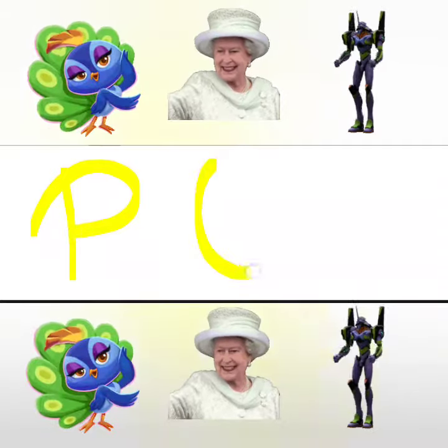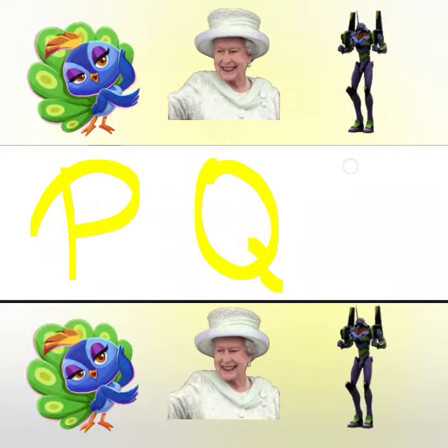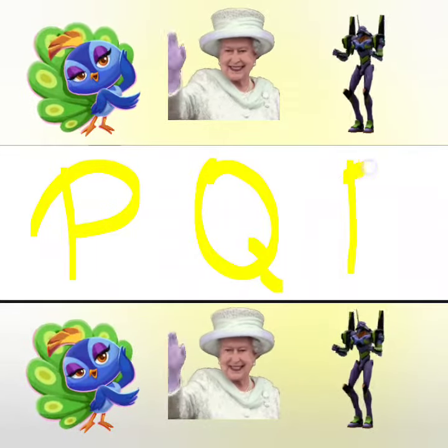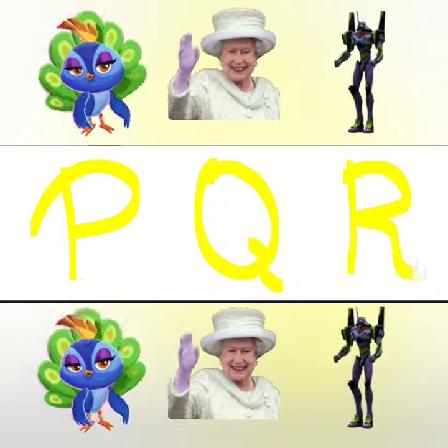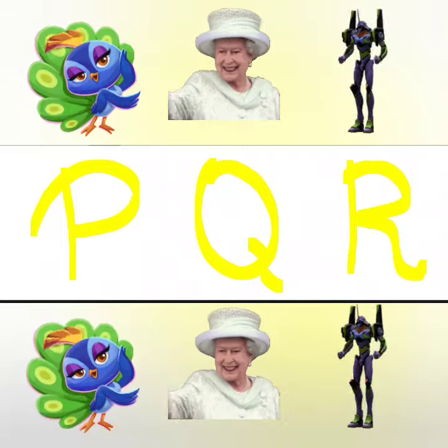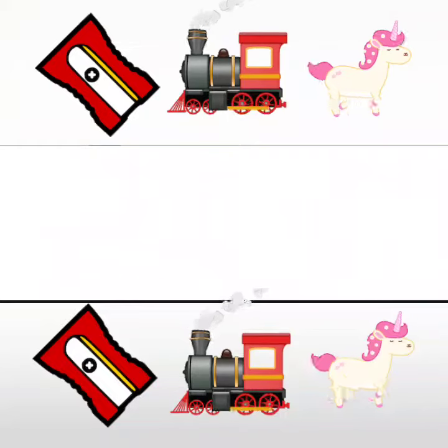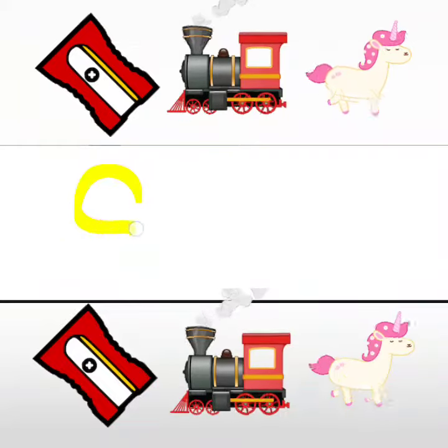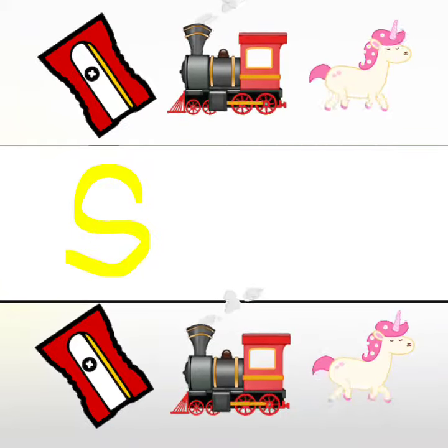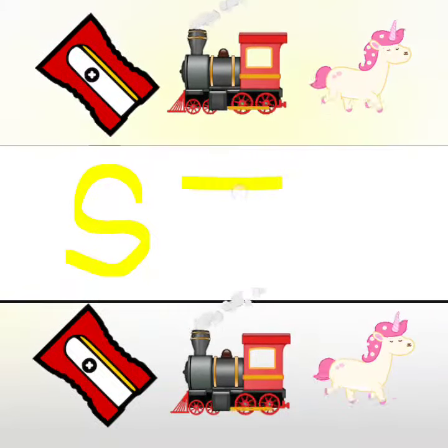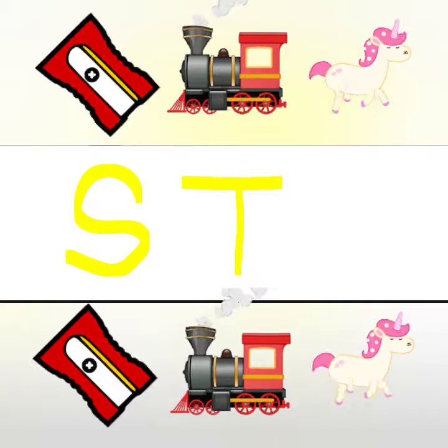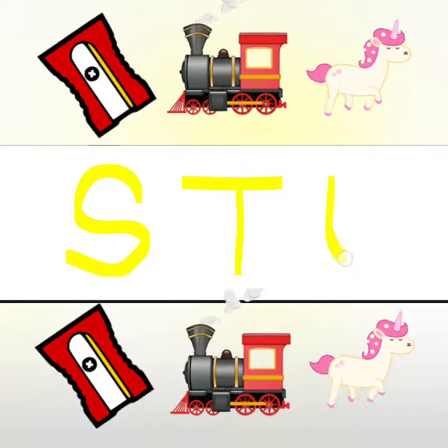Q for Queen, R for Robot, S for Sharpener, T for Train.